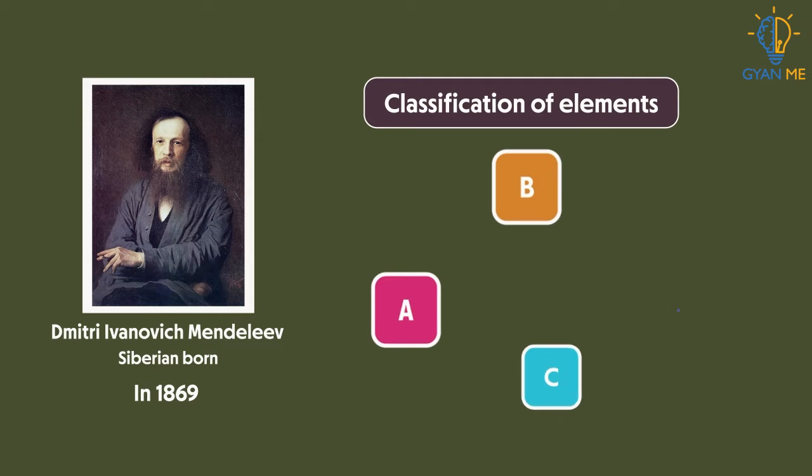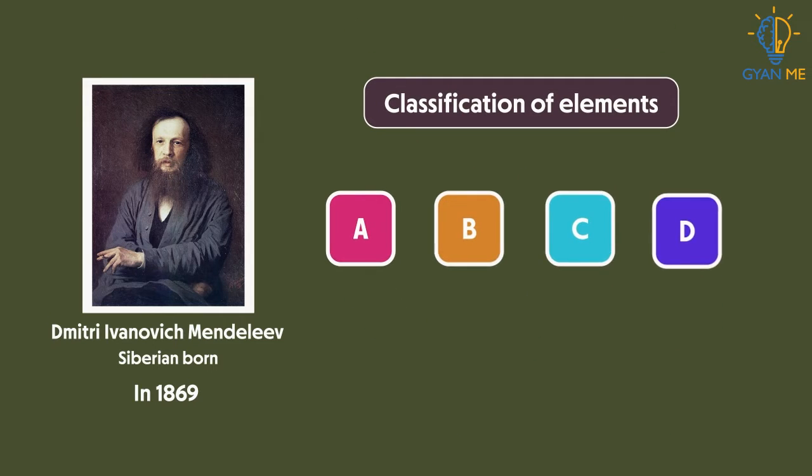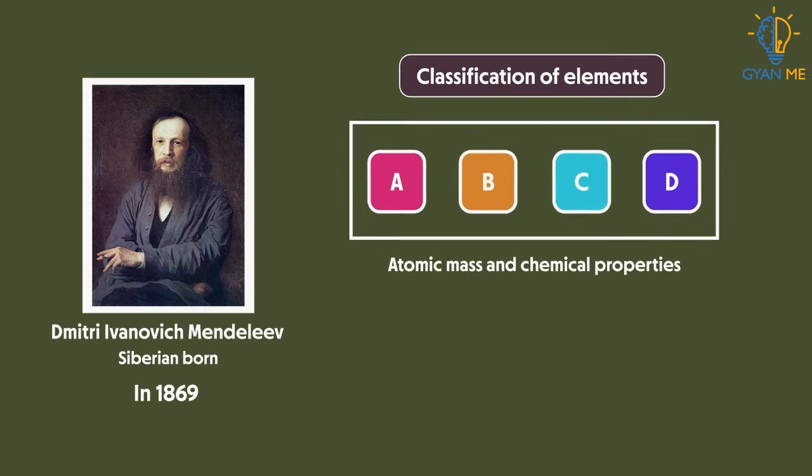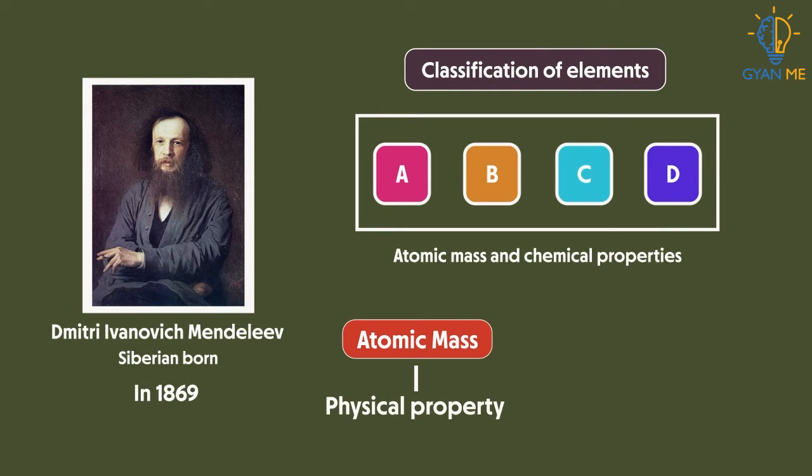Mendeleev was trying to classify the elements based on their atomic mass and chemical properties. He thought there was some sort of relationship between their atomic masses, a kind of physical property, and their reactivity, a kind of chemical property.